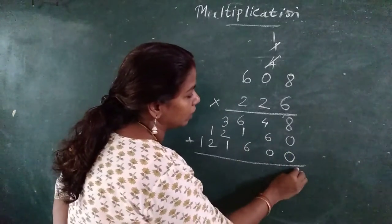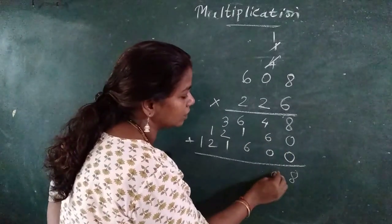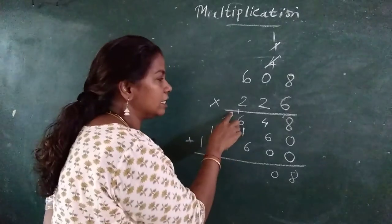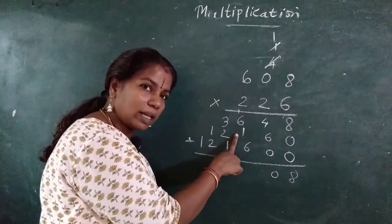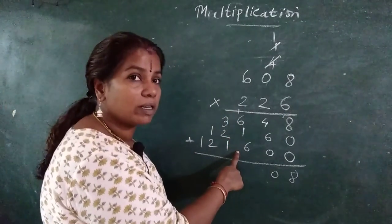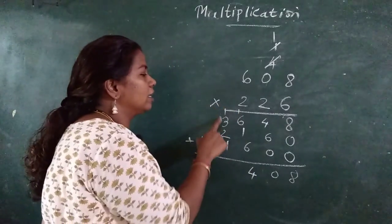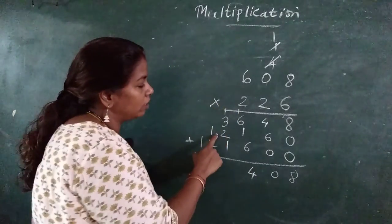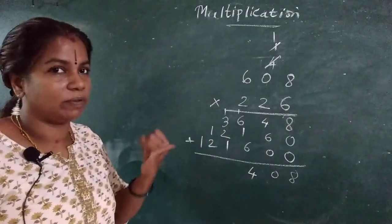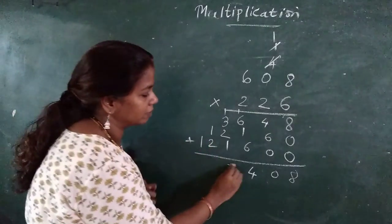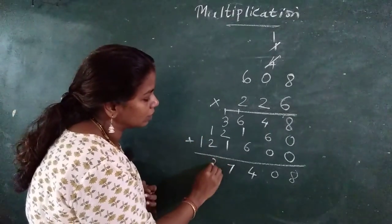Now 8 plus 0, 8. 4 plus 6, 10. 0 here, carry 1. 6 plus 1, 7. 7 plus 1, 8. 8 plus 6 is how much? 14. 1 carry. 3 plus 1, 4. 1 plus 2, 3. Got it?